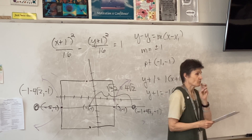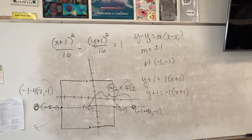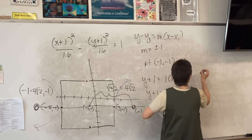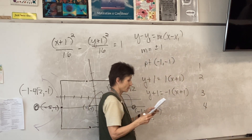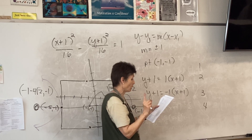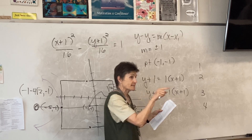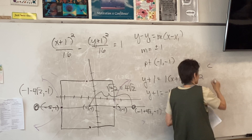What are two things you could look at? Which letter comes first and what the center is. Tell me any of them. Equation number 1 is C because it's centered at the origin and x comes first. Number 3 is B — same idea: centered at the origin, no parentheses, and y is first.